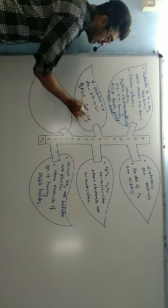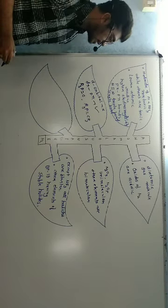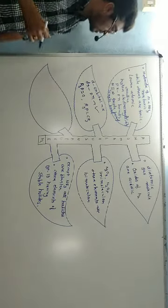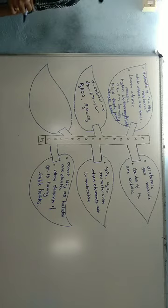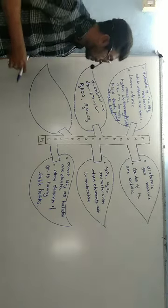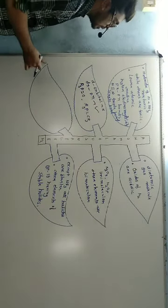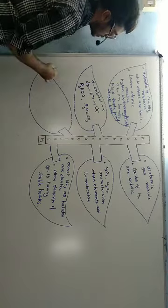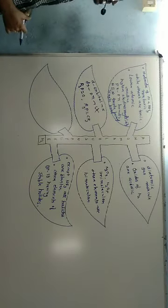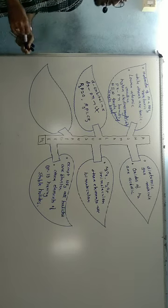Phosphorus, for example, can form compounds like R3P=O and R3P=CH2 — phosphorus ylides — where a double bond involving d-orbitals is present. These dπ-pπ bond formations are possible for phosphorus and other heavier group 15 elements, but not for nitrogen since it lacks d-orbitals.